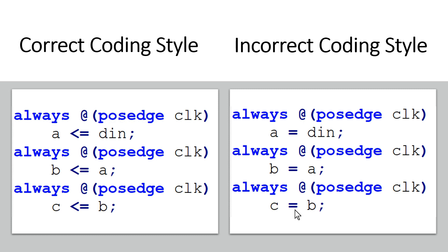We also observed that simulation results come out wrong when using blocking assignment statements inside the always block because there exists a race condition. We even observed that if we change the order of these statements, the simulation results vary, which is again unexpected and wrong behavior. As per Verilog design guidelines, these always blocks work in parallel and their position in the .v file should not matter. I also mentioned that using multiple statements inside a single always block will definitely trigger a condition where synthesis results will be wrong.